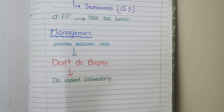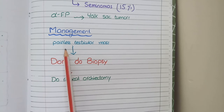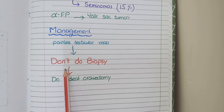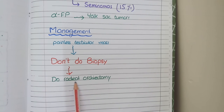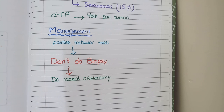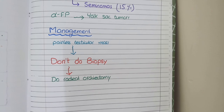Regarding management, there is one key point: if a patient presents with a testicular tumor mass, you do not perform a biopsy to diagnose it, because biopsy risks tumor spillage into the scrotum, allowing the tumor to spread. Instead, the management is radical orchiectomy — if a patient presents with a painless testicular mass and testicular cancer is suspected, the tumor is directly removed. This concludes the discussion on the pathology of testicular tumors.